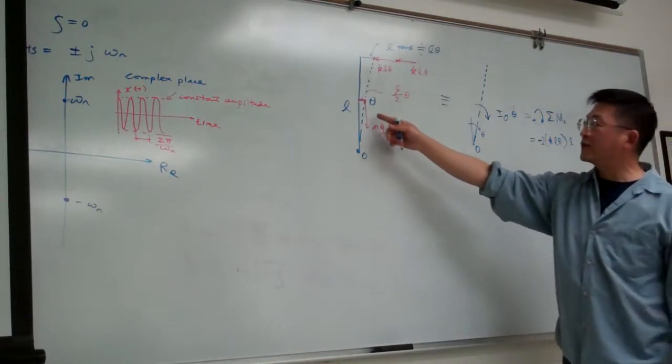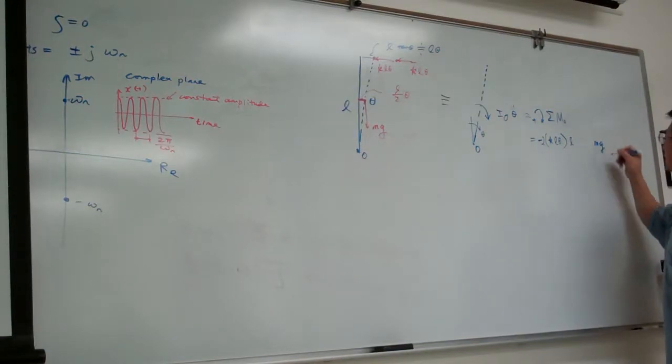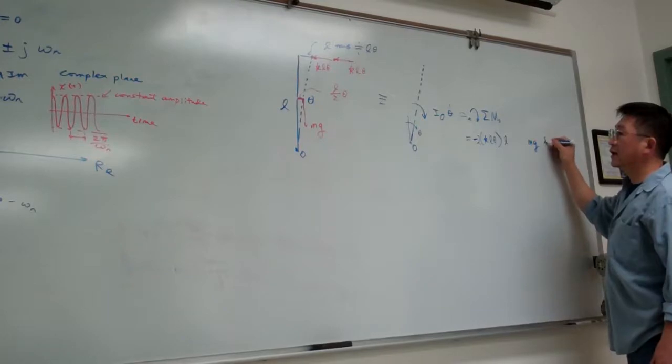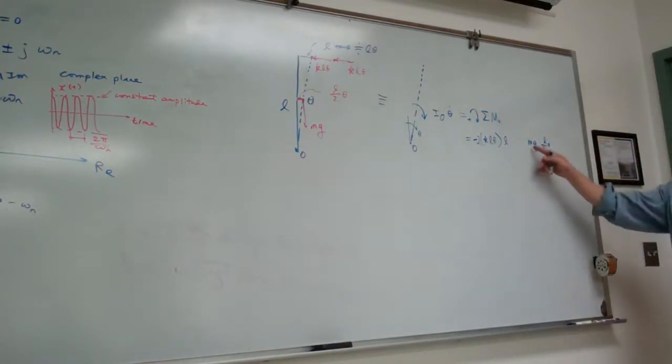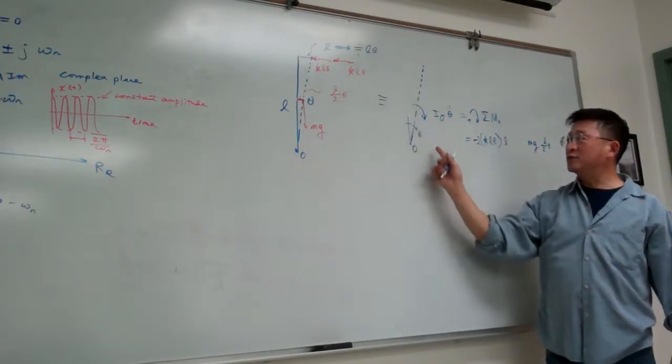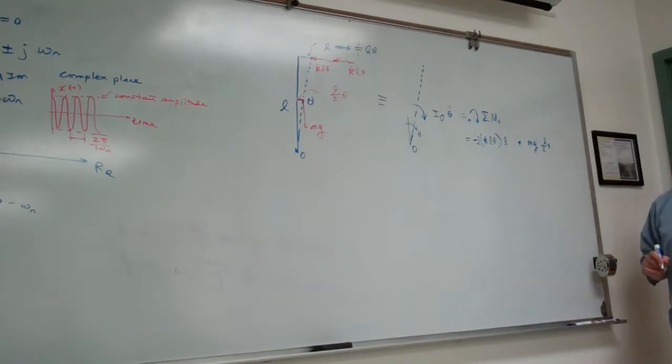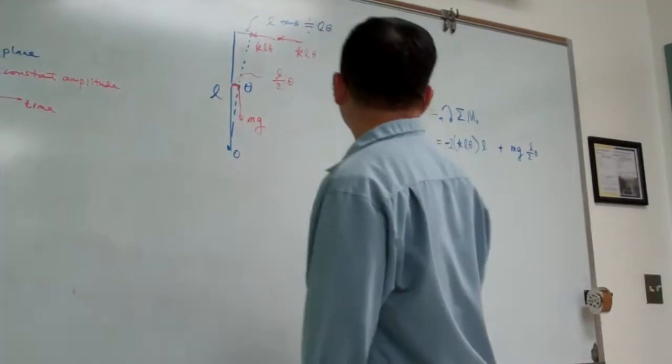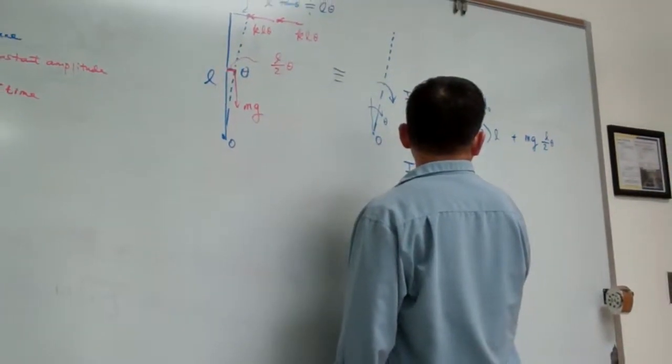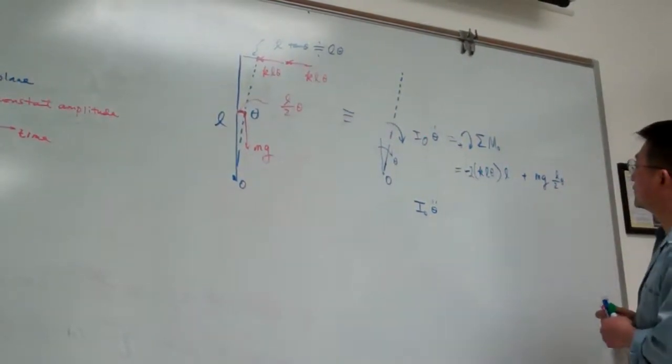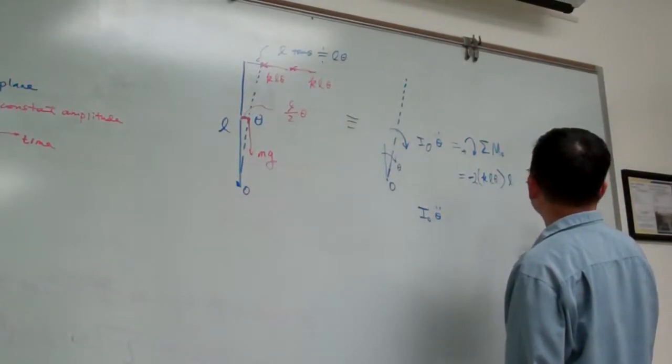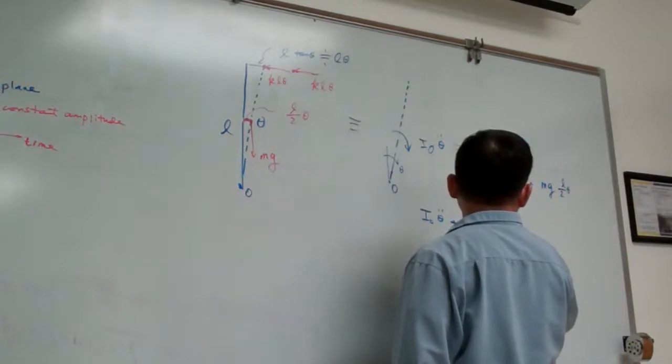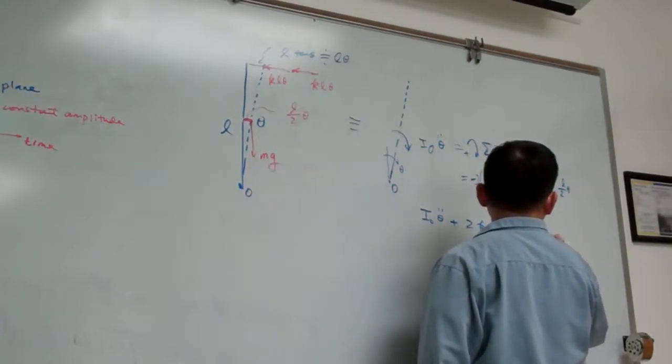We have two such springs, so multiply by two. Now for the gravity induced, the force is mg coming down, multiply with the lever arm, that is the moment about this pivot. Multiply with L over two theta. This moment aligns to our sign convention, so that's positive. Then we rearrange: I_O theta double dot plus 2KL^2 theta minus mgL/2 theta equals zero.